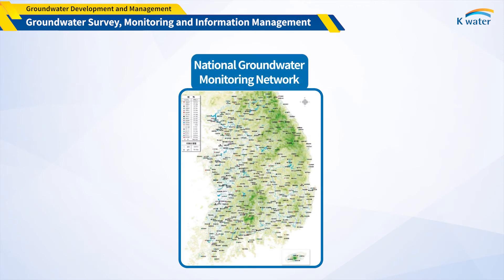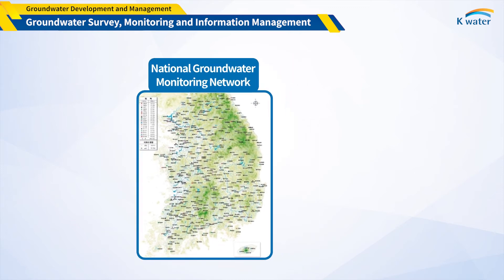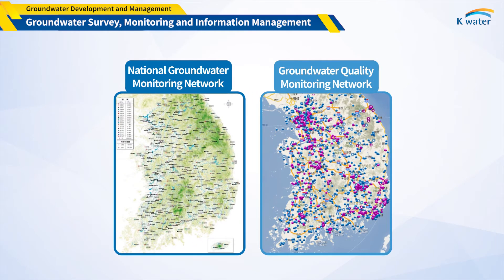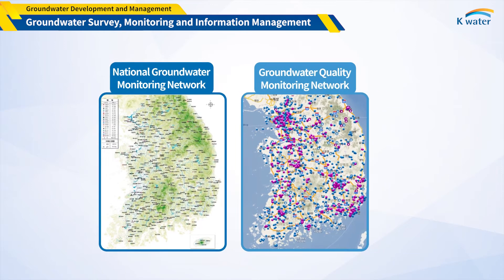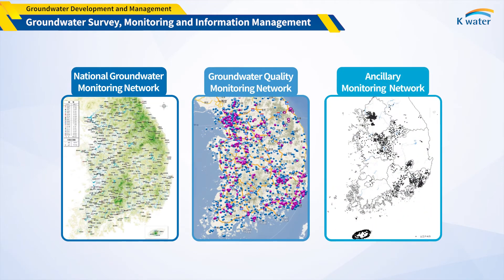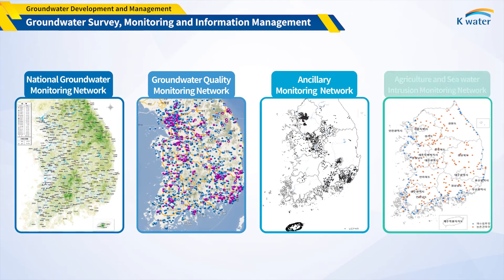Korea is also conducting a Groundwater Monitoring Network project to monitor groundwater level and water quality nationwide. The central and local governments operate four types of monitoring networks. The first is the National Groundwater Monitoring Network, which monitors background water level and water quality, run by the central government. The second is the Groundwater Quality Monitoring Network, to observe water quality in contaminated areas such as industrial complexes. The third is the Ancillary Monitoring Network, operated by local governments. The last is the Agriculture and Seawater Intrusion Monitoring Network, for observing groundwater in rural and coastal areas.